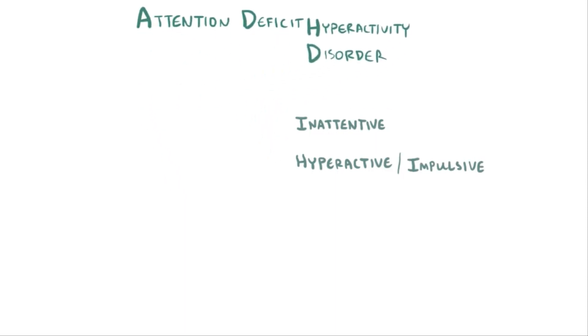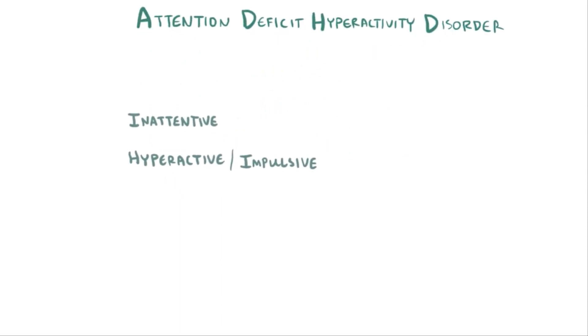So somebody might be diagnosed with ADHD because they have symptoms related to not being able to pay attention, but they might also be diagnosed with ADHD if they have symptoms related to being overly active and impulsive. They might also have ADHD if they have symptoms of both.